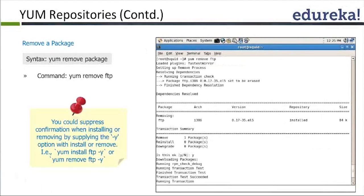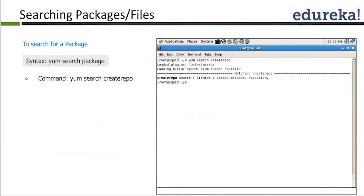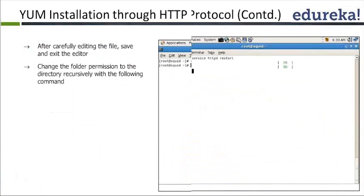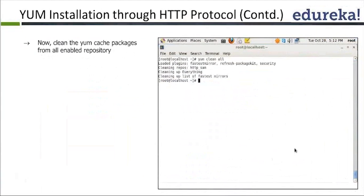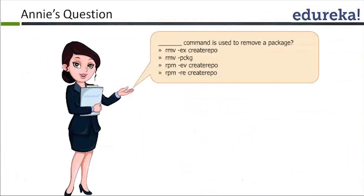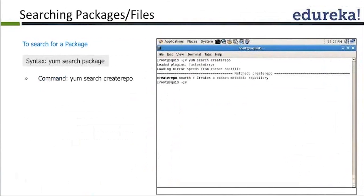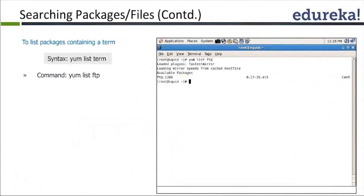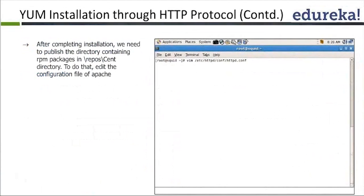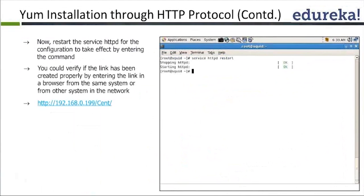YUM will simply pull and install everything. We have seen all the arguments of YUM so far. The next thing is: once you have created a repository, you can enable an HTTP service on top of that repository.